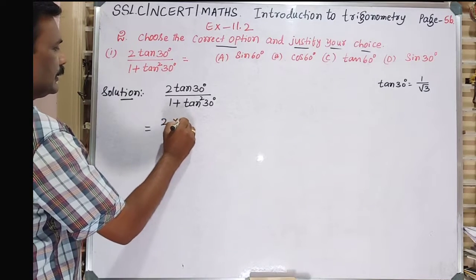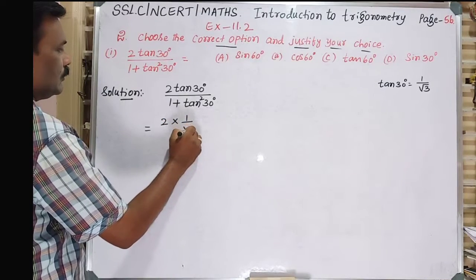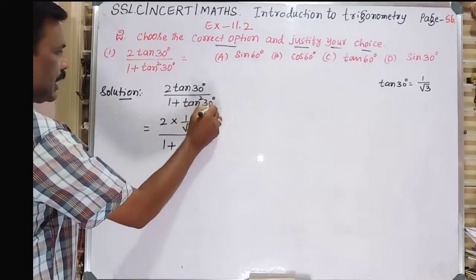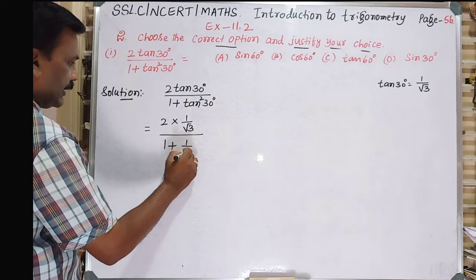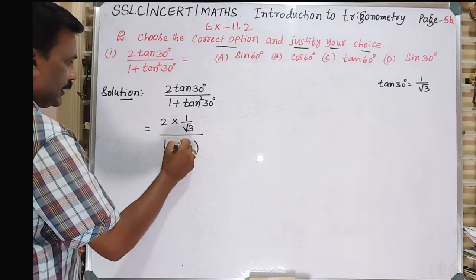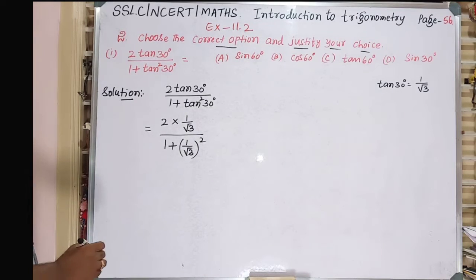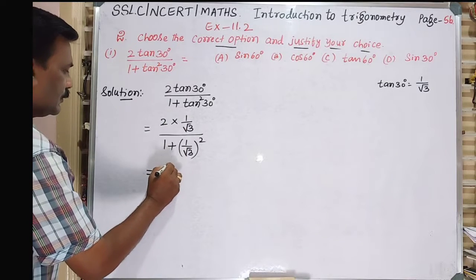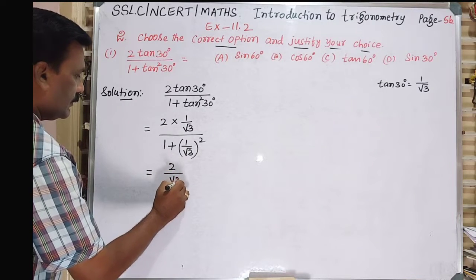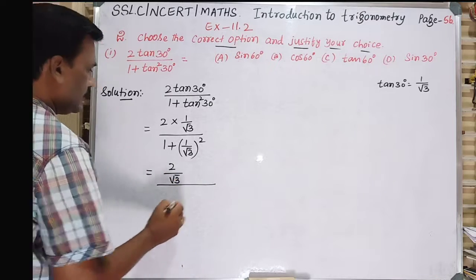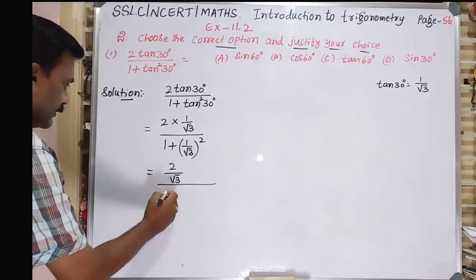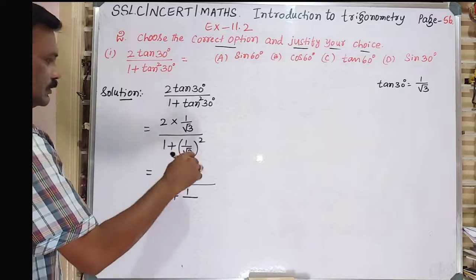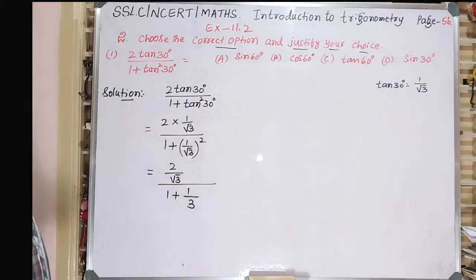So I'll substitute: equals 2 times 1/√3 divided by 1 plus tan30° whole square, which is (1/√3)². Just simplification: this is equal to 2 times 1/√3 divided by 1 plus 1 divided by (√3)², which is 1 divided by 3.